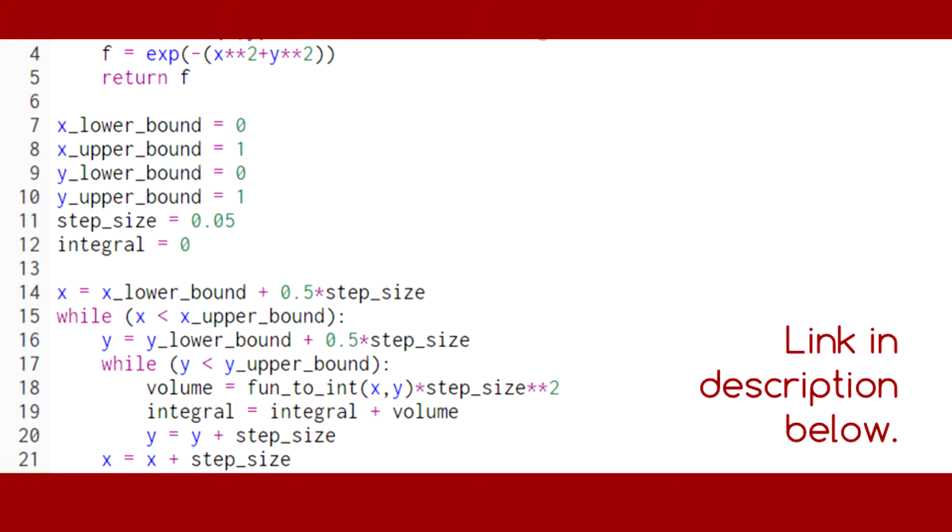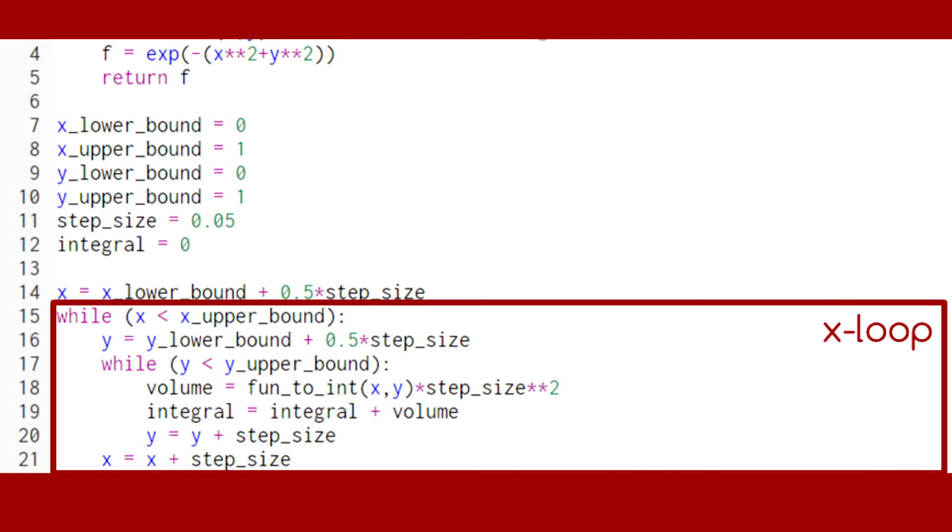In this code, which is available in a link in the description below, we've implemented the midpoint rule in two dimensions. Notice that since we have two variables to integrate over, we need to set up two loops, one inside the other.